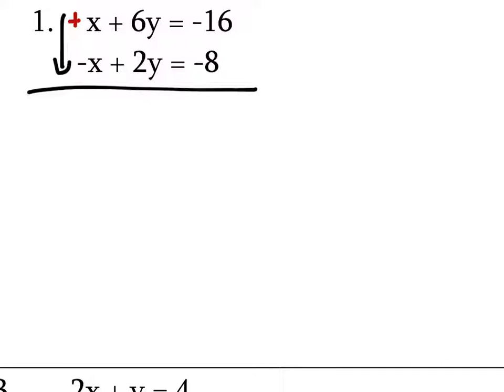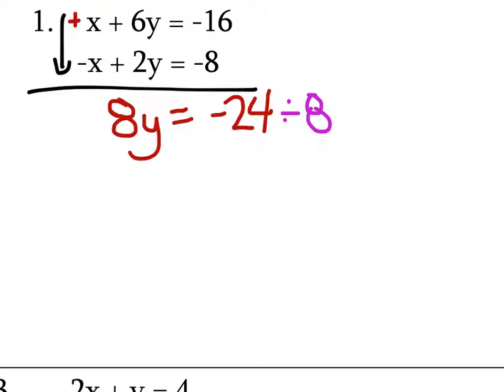Then we've got 6Y plus 2Y, which is 8Y. 8Y equals negative 16 minus 8. That's so much easier — just divide by the coefficient. So Y is negative 3.